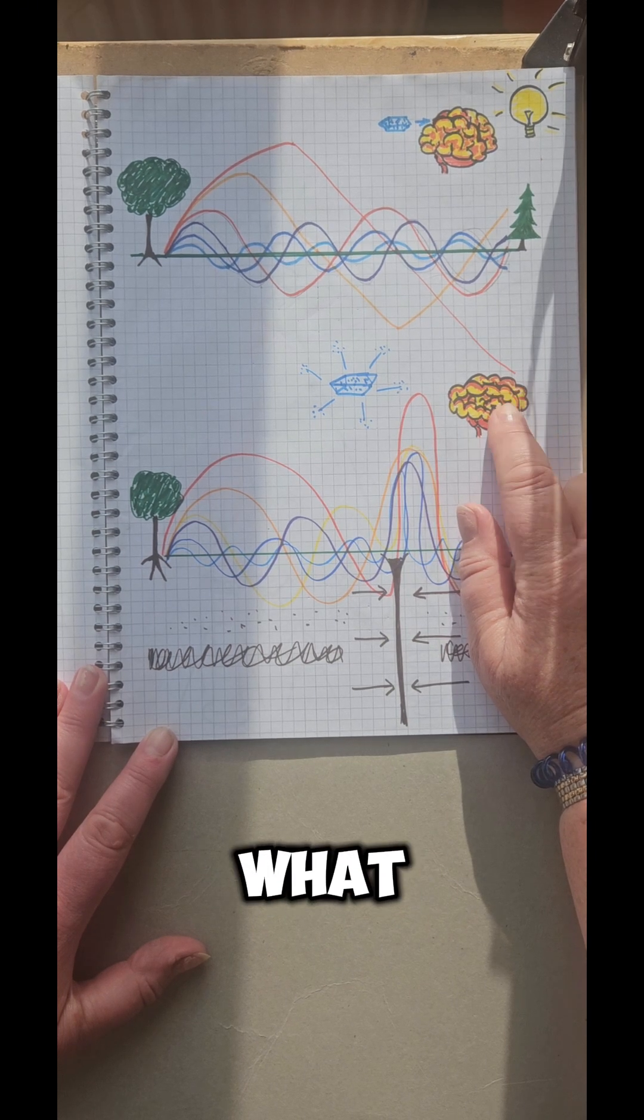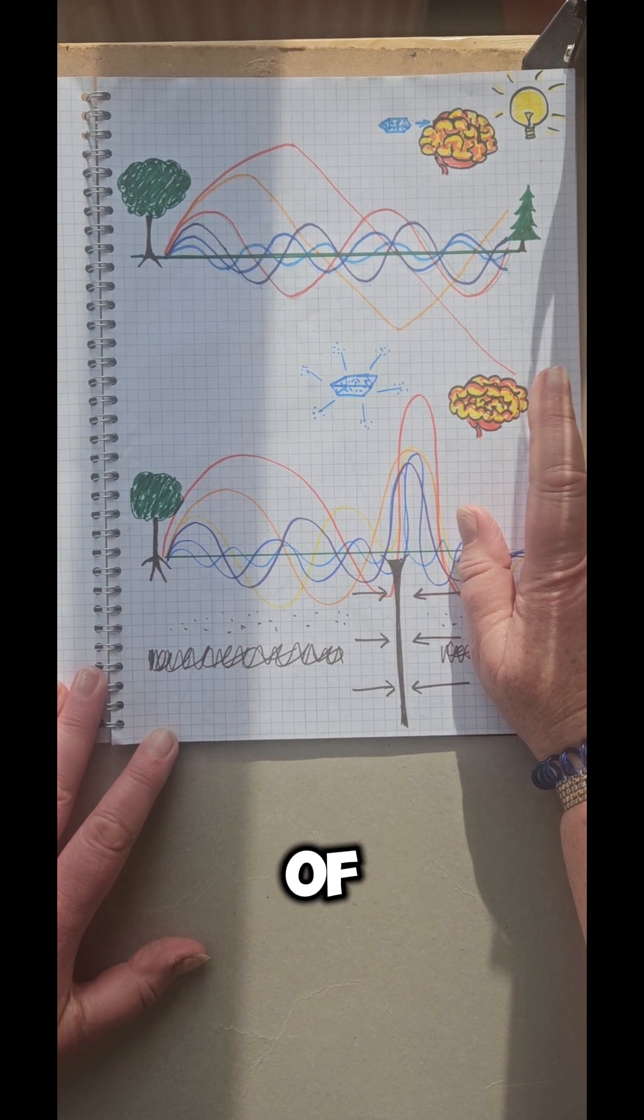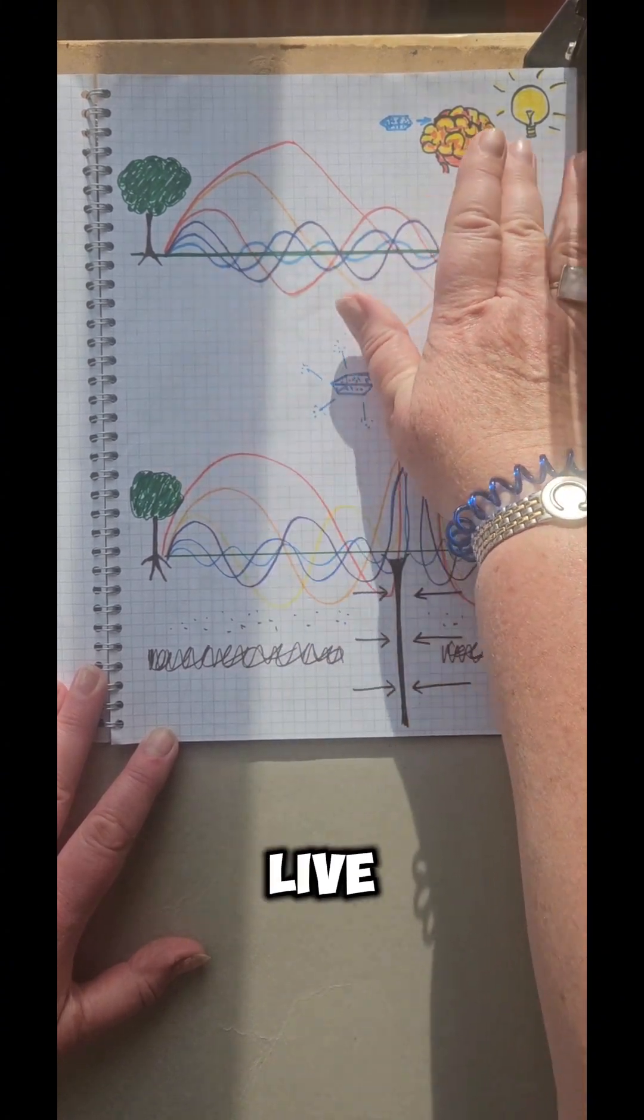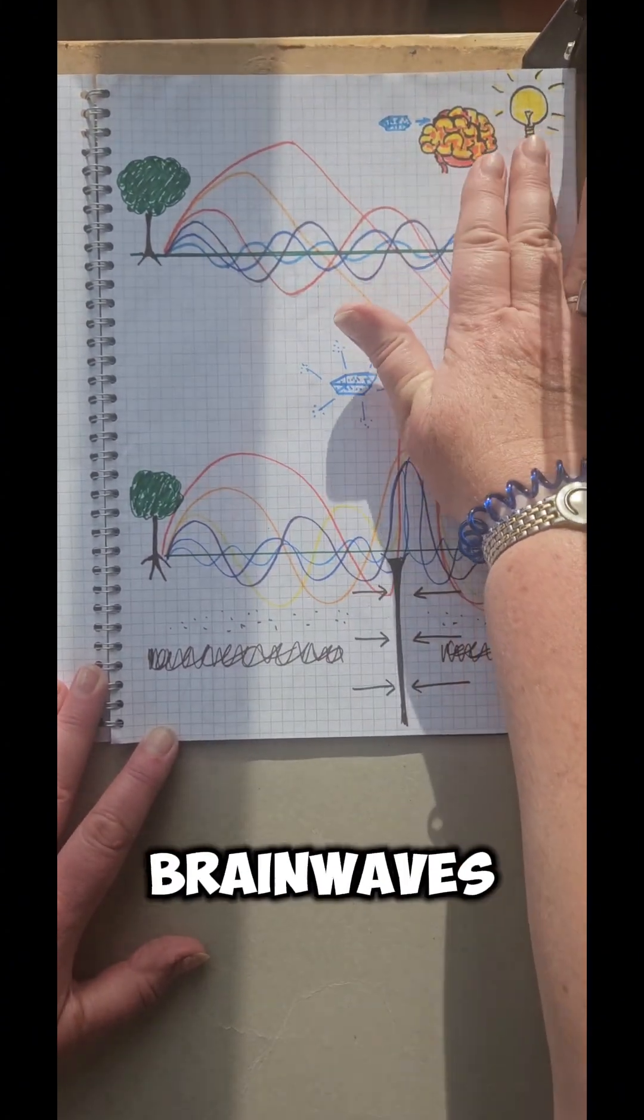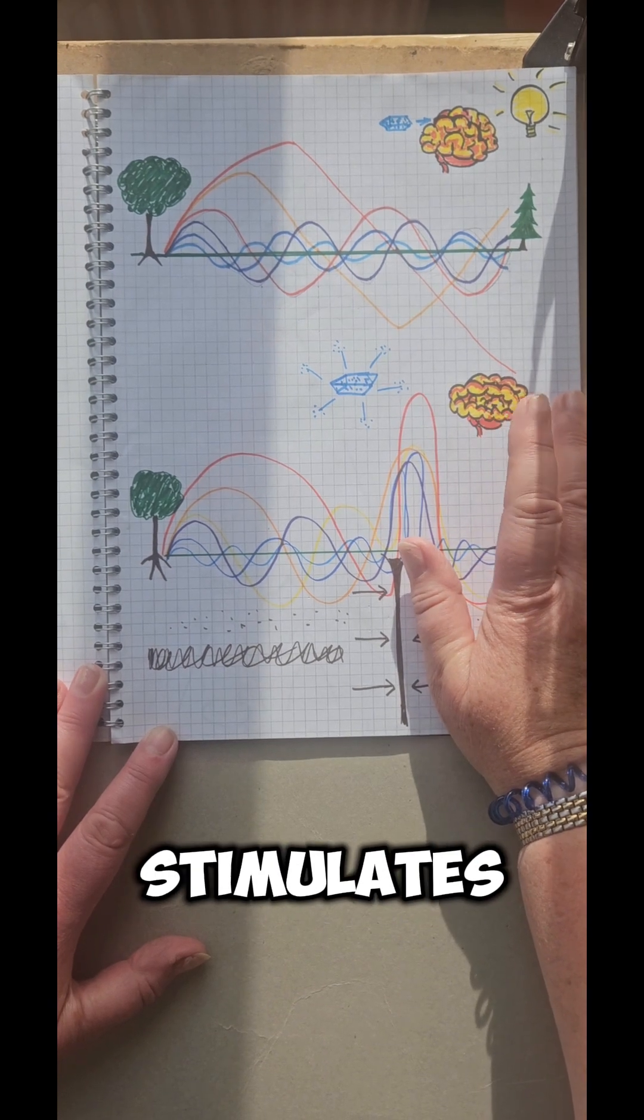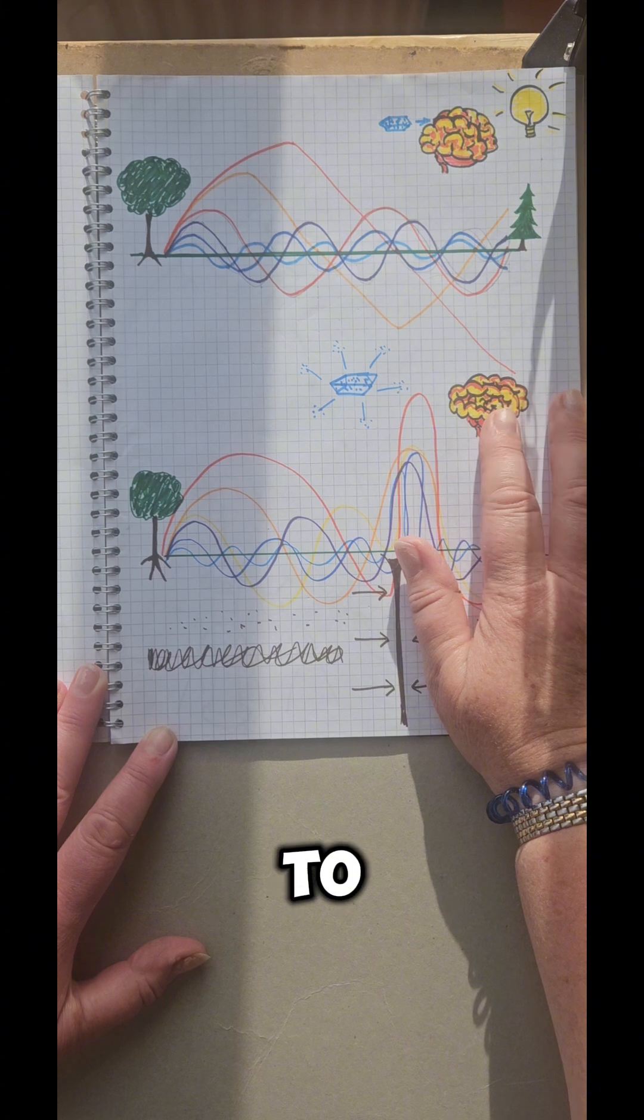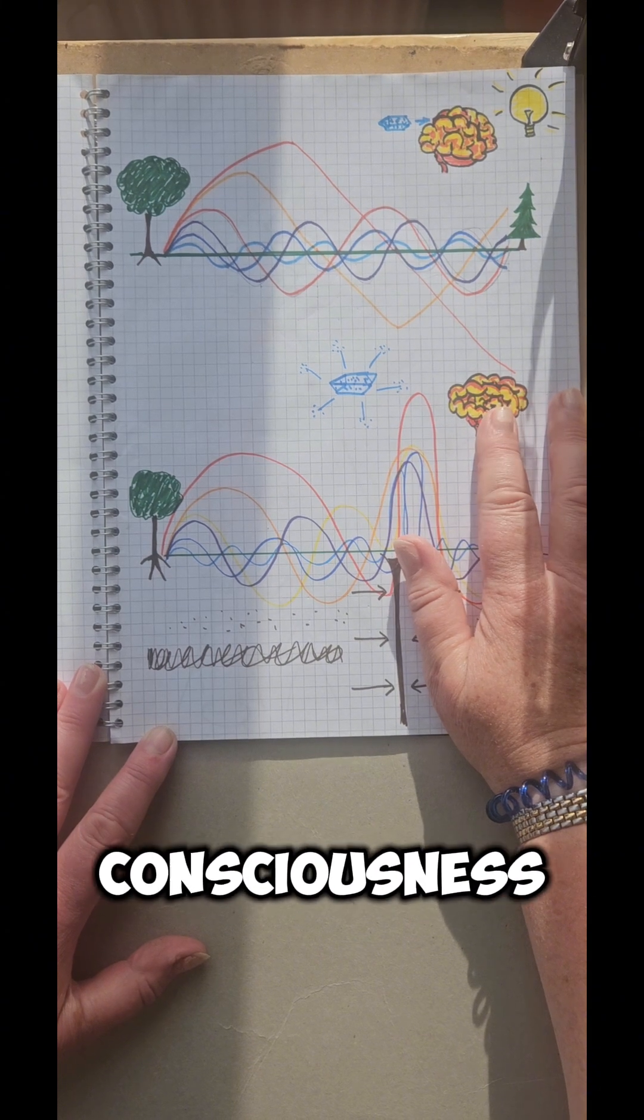So what it enables us to do is sort of step out of the bounds of our normal consciousness. Over here, we live in our normal day-to-day brain waves. Over here, this stimulates different neurochemistry in the body, in the brain, which allows us to have altered states of consciousness.